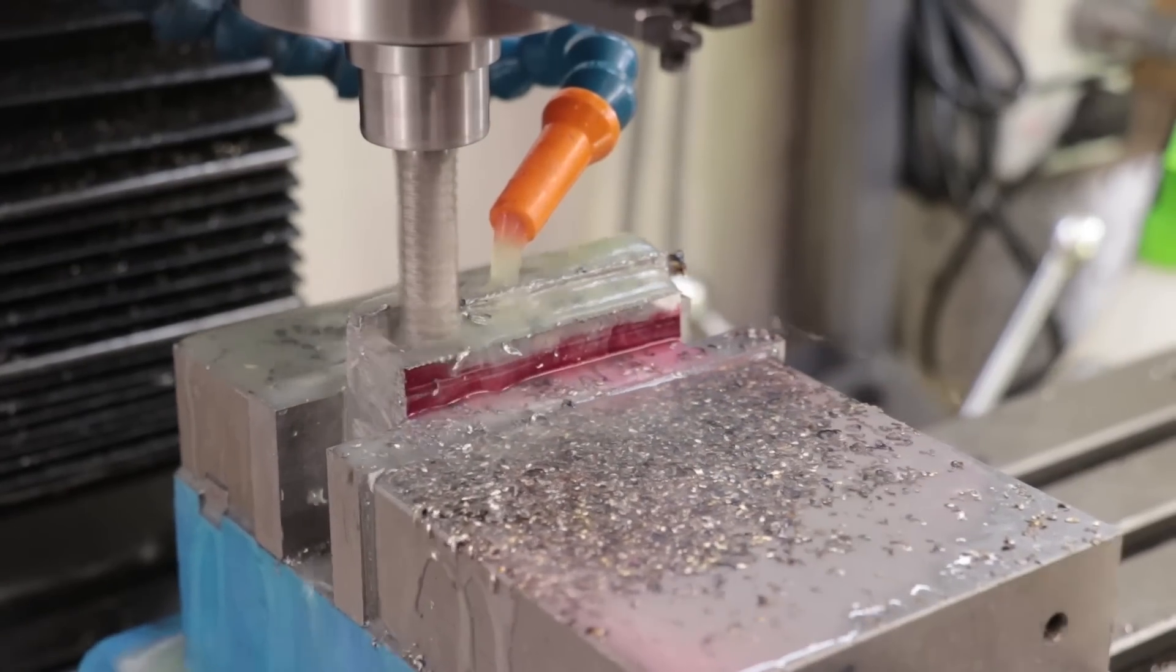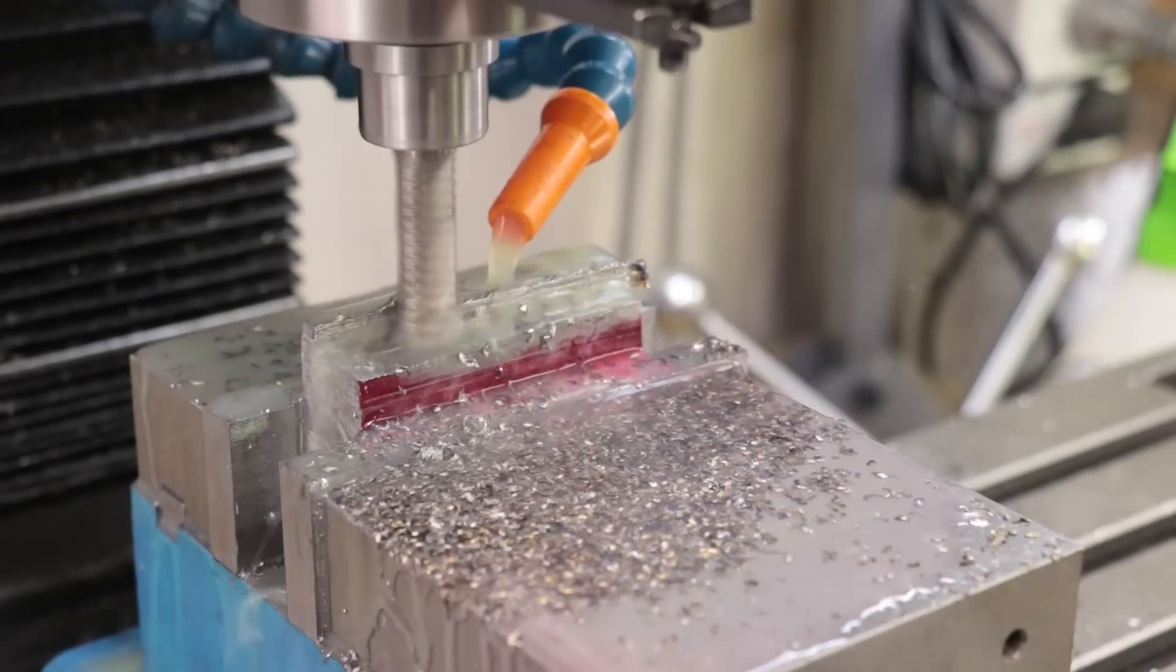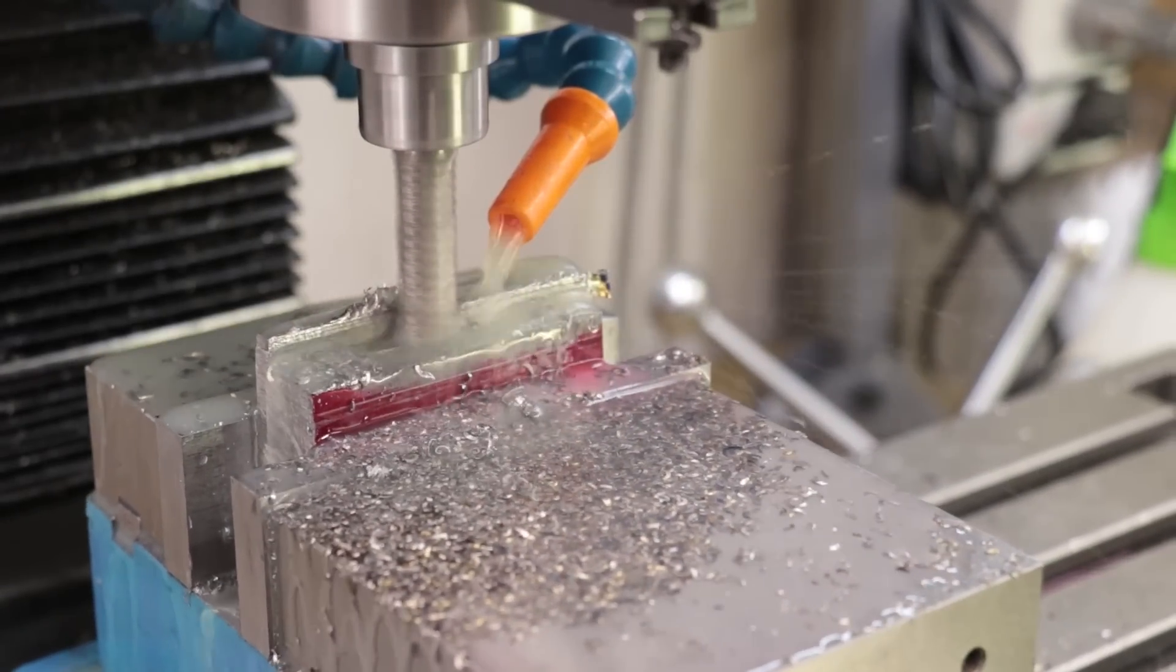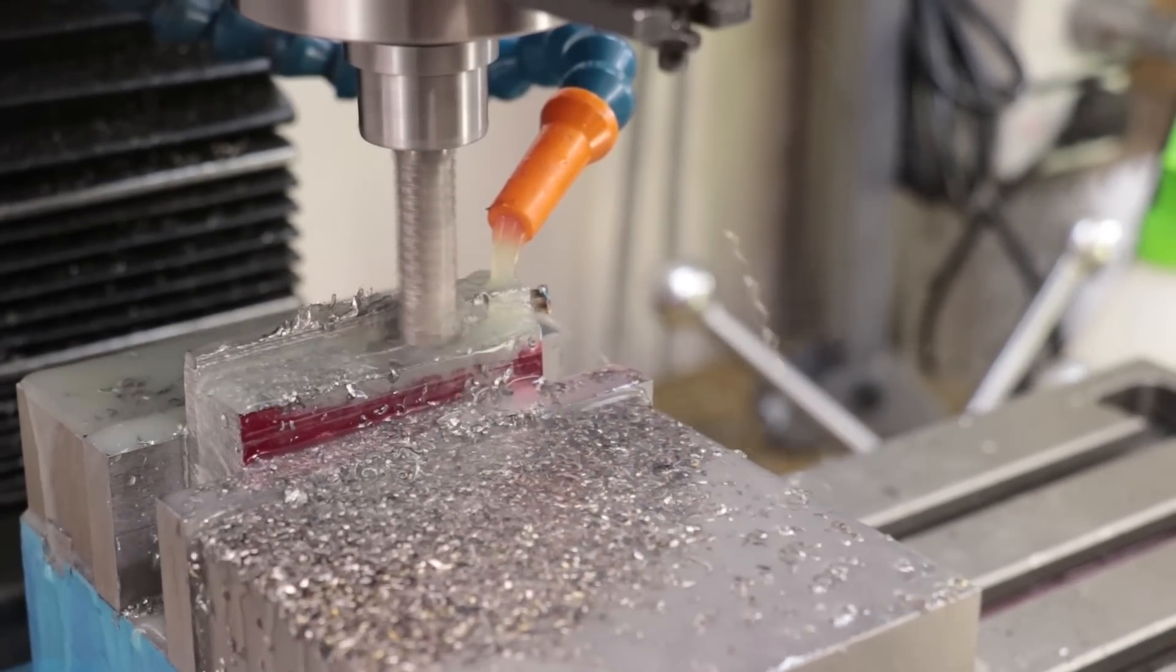The part is a little bit tall so I'll remove the bulk of it with a roughing end mill and coolant and then I'll fly cut it down to final size.